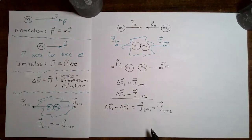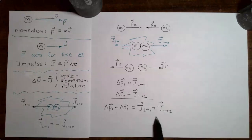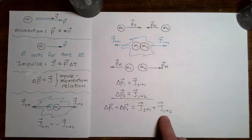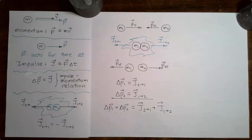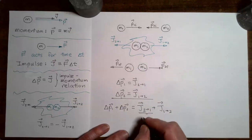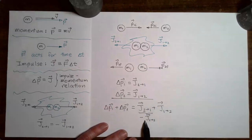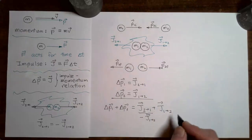See if you can get to the conclusion. It is possible, using information I've already reminded you of in this video, to assign an exact numerical value to the expression on the right. Maybe pause the video, see if you can figure out what the exact numerical value of this expression is. Did you notice that the impulse that two gives to one and the impulse that one gives to two are exact opposites? We can take this equation and replace J2 on one with minus J1 on two.